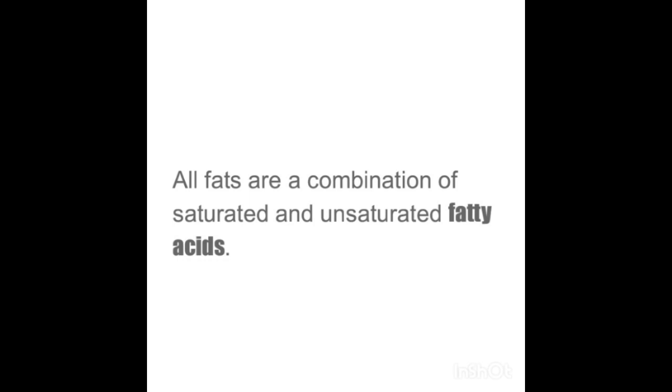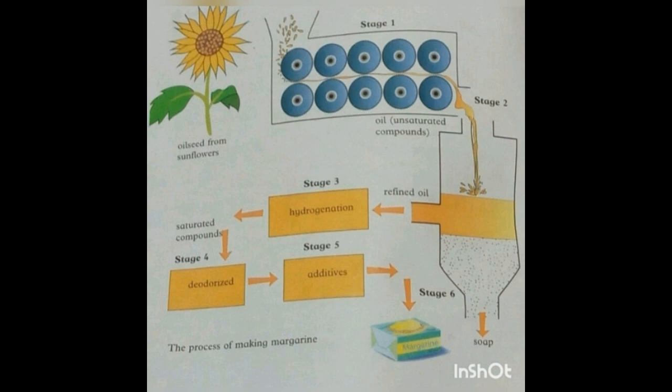Some fats and plant oils can be turned into valuable food products such as margarine. The oil for making margarine comes from the seeds of plants such as sunflower. In stage one of the process, sunflower seeds are crushed and squeezed to extract the oil.